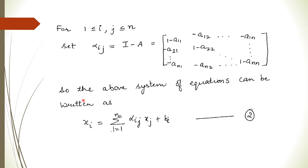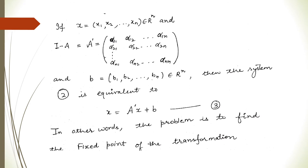So xi can be written with these new coefficients multiplying xj, plus the right-hand side coefficients bi. The above system can be written in the form x = A'x + b, where A' is the new coefficient matrix with entries α_ij as defined previously — that is, (1 - a_ii) on the diagonal and so on. Basically we have a transformation, and we have to find the fixed point of this transformation. This becomes our f(x), so we need to find values of x such that x = f(x).